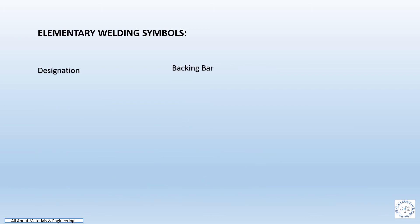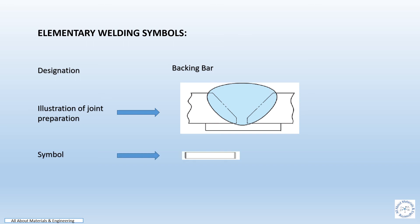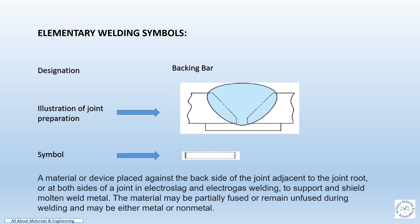Elementary welding symbol for backing bar. The sketch illustrates the joint preparation for the joint and the symbols to be represented in the drawing. A material or device placed against the back side of the joint, adjacent to the root or at the board side, in electro-slag and electro-gas welding to support and shield the molten weld metal. The material may be partially fused or remain unfused during welding, and may be either metal or non-metal.